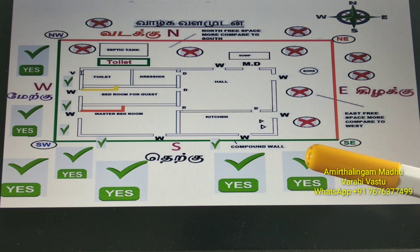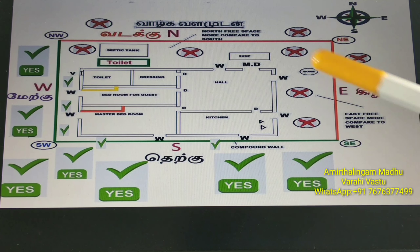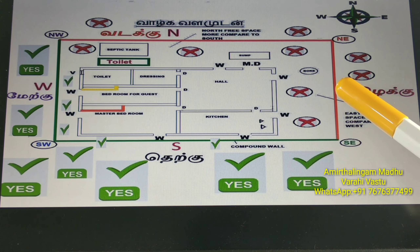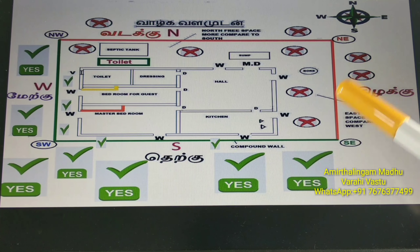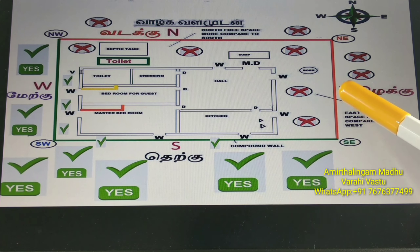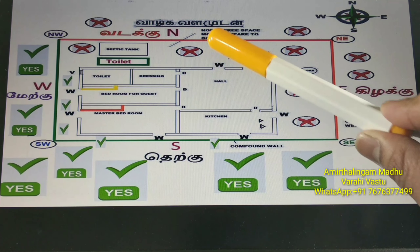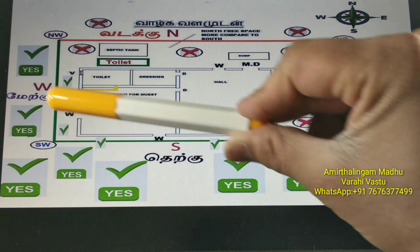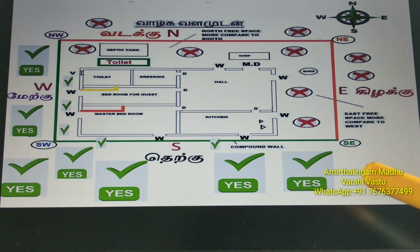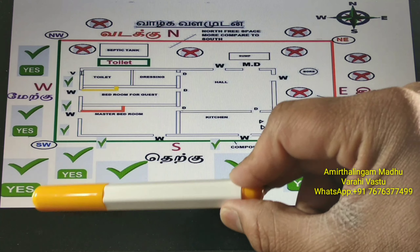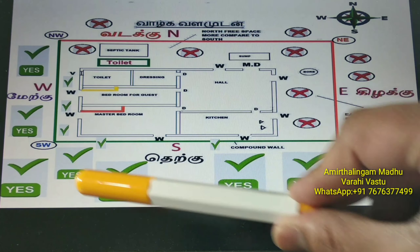For example, assume this plot is 30 by 40. As we said, trees should not come at the east and north side — wherever the cross mark is there, trees should not come. Trees we can keep at the south and west. Especially in the south-west, we can keep big trees. As per Vasthu, it should carry more weight in the south-west.